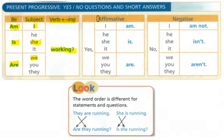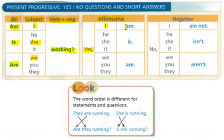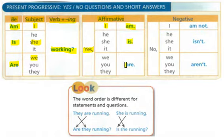The answer to the questions — affirmative, or a yes answer — is: yes, followed by the subject I and then the verb to be, am. Yes, he, she, or it is. Yes, we, you, they are.